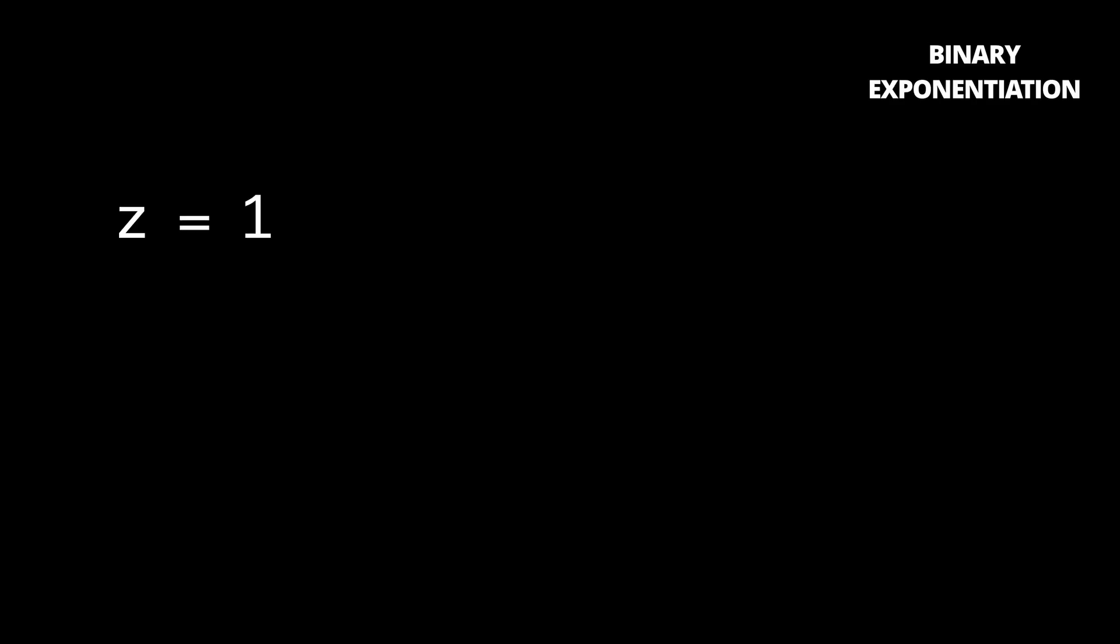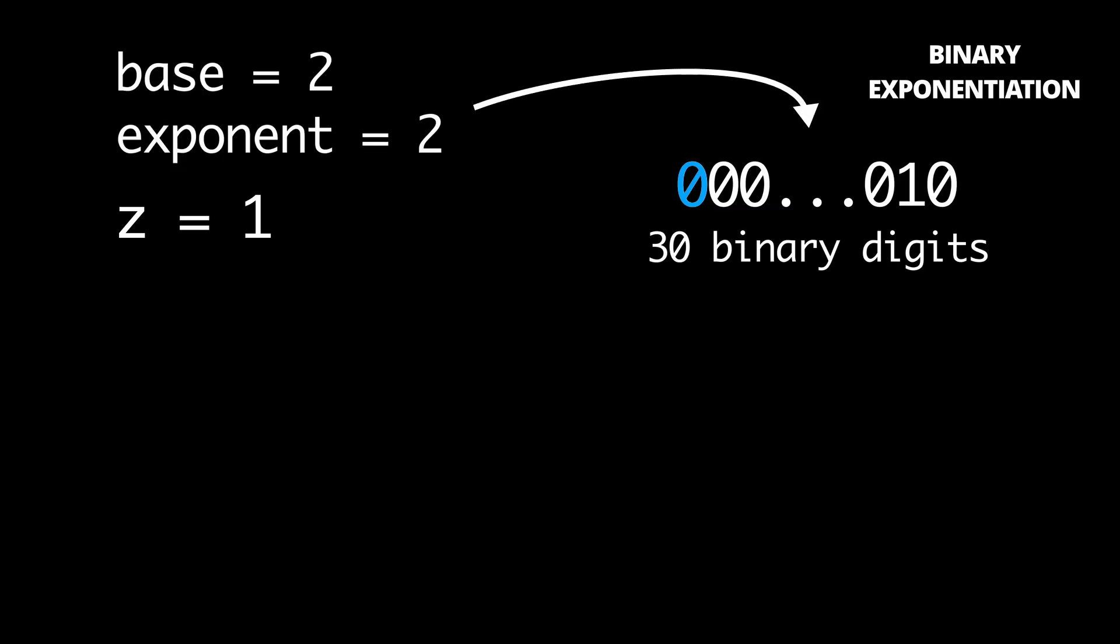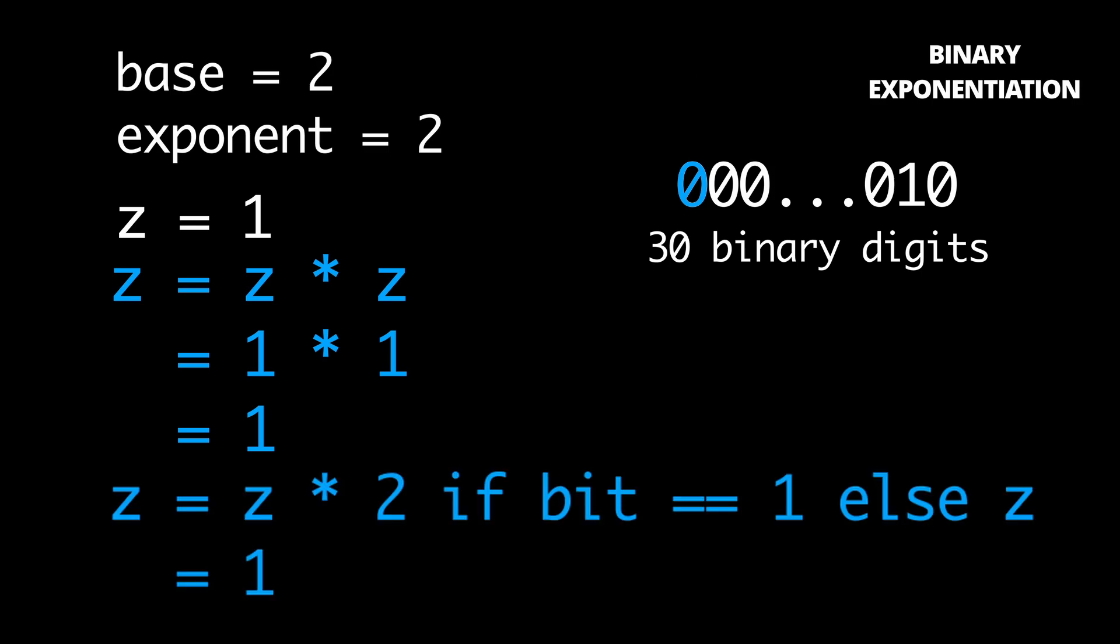It first defines an accumulator variable, z, that's set to 1, and starts by looking at the leftmost bit of the exponent. It multiplies z by itself, and if this bit is a 1, it then multiplies z by the base. It does the same for the second bit, and continues doing so for every bit in b, and eventually z contains the answer.